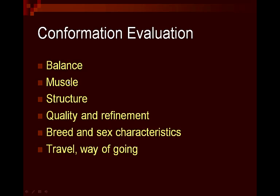The basic categories we're going to evaluate a horse at halter on are balance, muscle, their structure, their quality and refinement, the breed and sex characteristics, and the travel and way of going. When you devise a set of oral reasons, these are really the basic categories that you're going to describe or talk about, with probably the most time spent on balance, muscle, and structure.